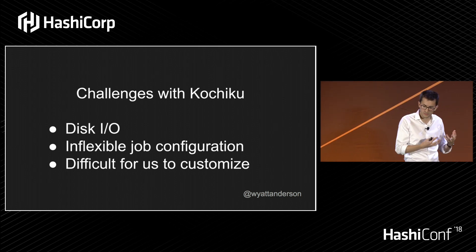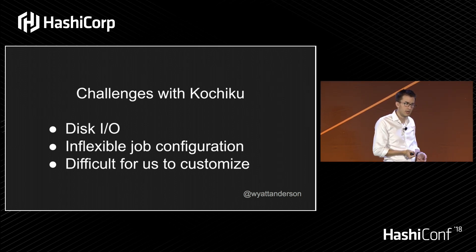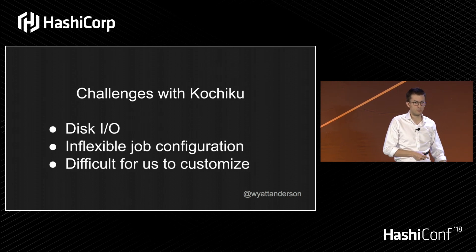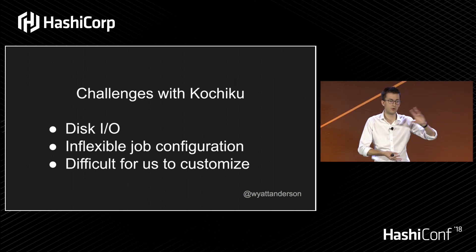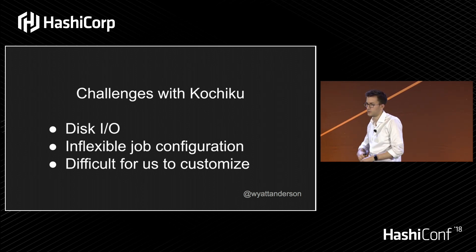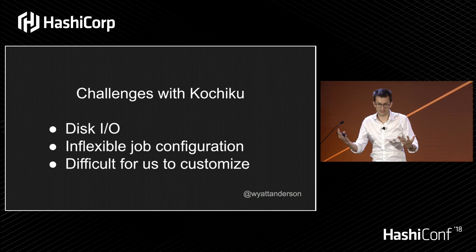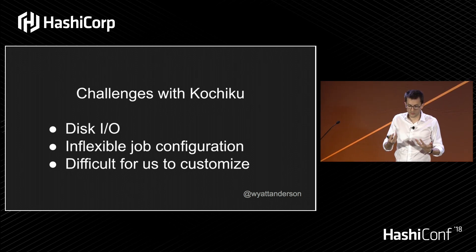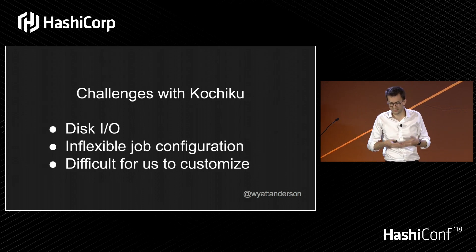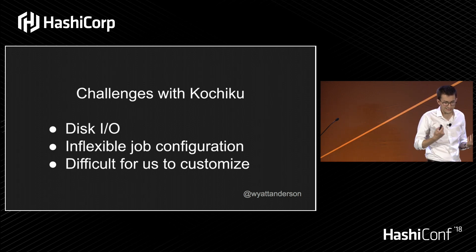Kochiku's job configuration wasn't flexible enough for us either. We wanted to parameterize build jobs — more RAM for Java tests, more CPUs for integration tests, multiple containers for high-level integration tests, building iOS binaries, running tests in IE on Windows. Kochiku was difficult for us to customize because it's written in Ruby and Oscar isn't a Ruby shop, plain and simple. For a Ruby organization, Kochiku might be a great choice. For us, it wasn't.